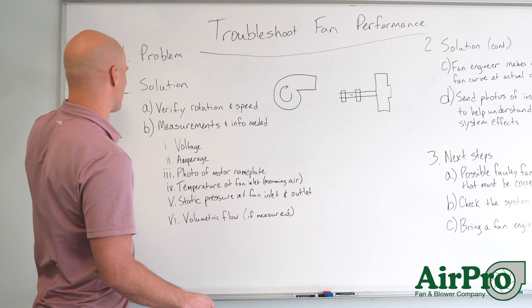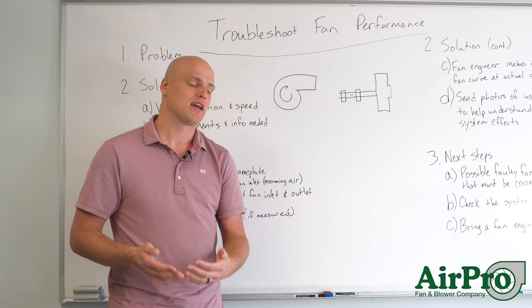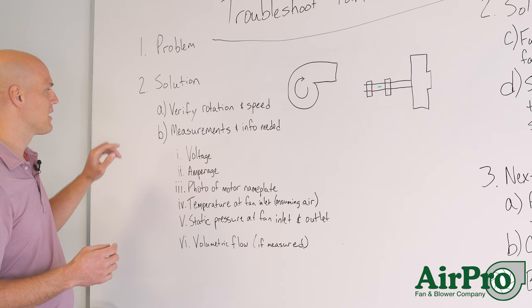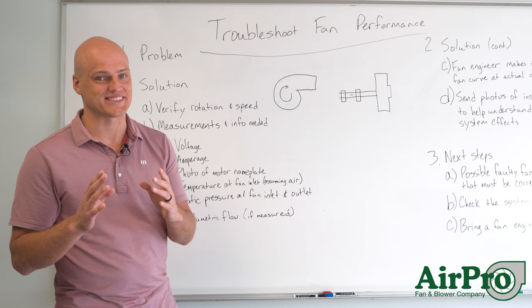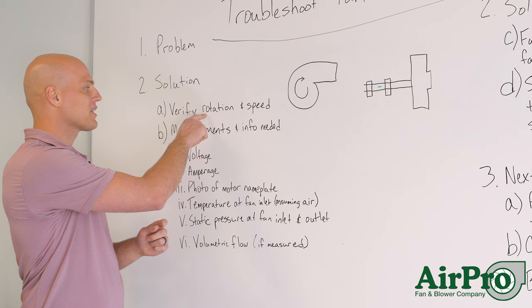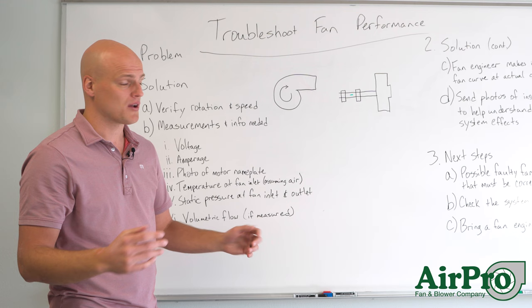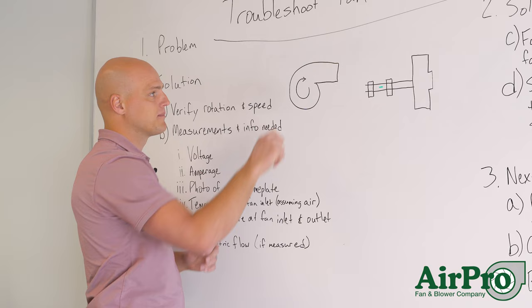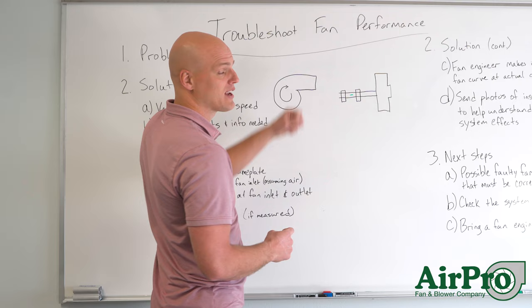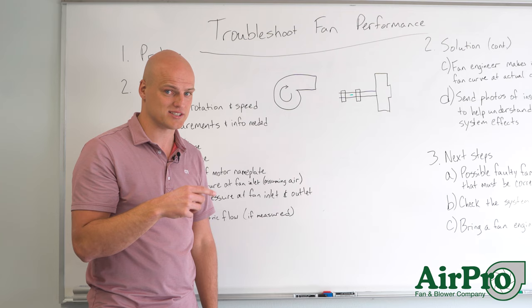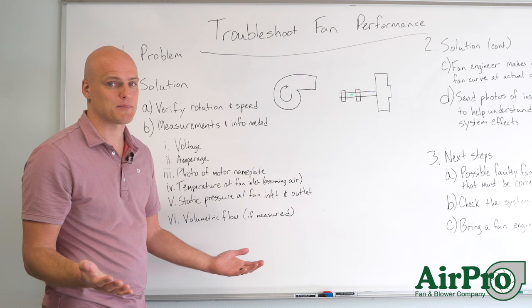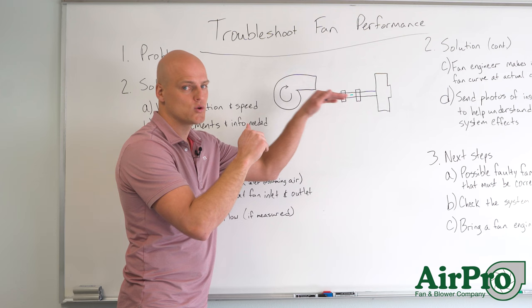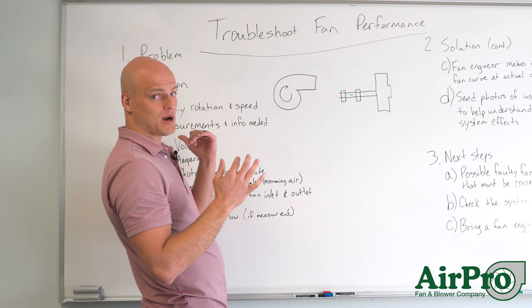We're going to look at number two: what is the solution? First, we're going to ask you to verify a couple of things that may seem very basic, but you'll be surprised at how many issues this catches. We're going to ask you to verify rotation and speed. In a centrifugal fan, you've got an inlet and an outlet. The outlet always indicates how your wheel needs to be spinning — it needs to spin in a way that sends the gas out the outlet. A centrifugal fan will always move air from inlet to outlet even if it's spinning backwards, so just reverse the rotation and you might fix your issue.